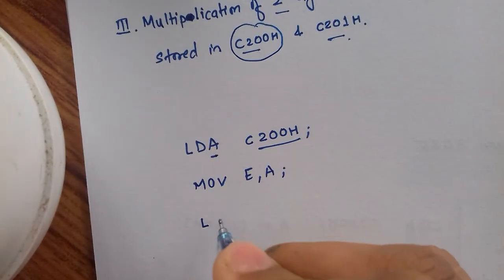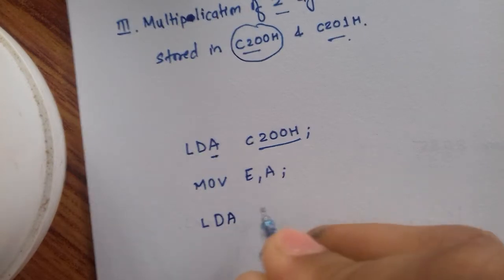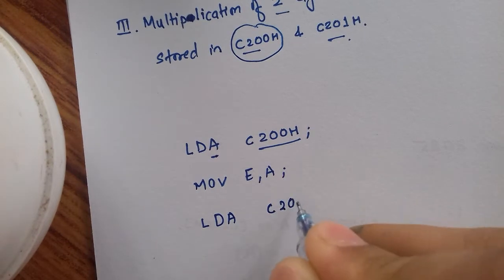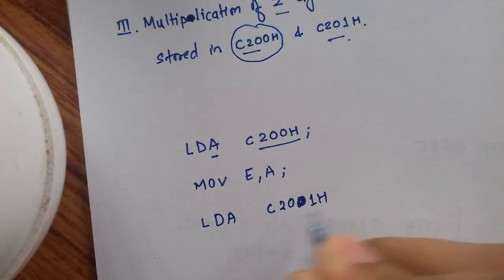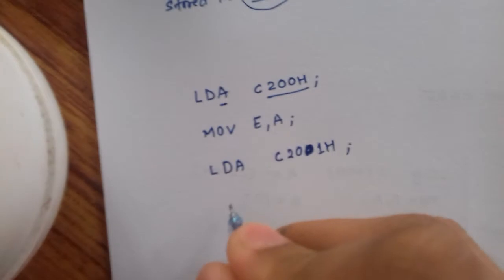Next, we load the accumulator with the content pointed to by the memory address C2001. Now we move this content into the C register.